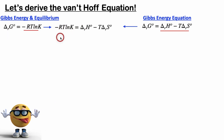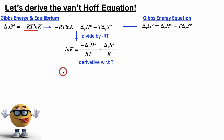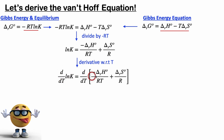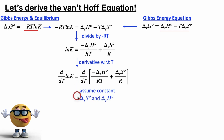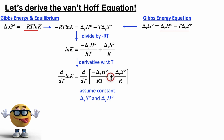From here we'll divide both sides by negative RT to get this equation, and now we're going to take the derivative with respect to T. You'll notice these are regular single-variable derivatives, not partial derivatives, because we're assuming that ΔS and ΔH are constant — meaning it doesn't matter what temperature we do the reaction at, ΔS and ΔH have the same values. They will change with temperature, but we'll assume they won't, and over small temperature ranges it's usually a pretty good approximation.